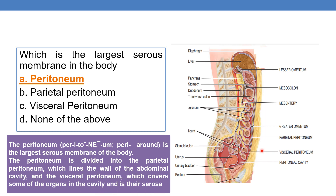If you see here, this is the parietal peritoneum (outer layer), and this inner layer is the visceral peritoneum. They enclose the peritoneal cavity, which is filled with peritoneal fluid. So, the largest serous membrane of the body is the peritoneum.